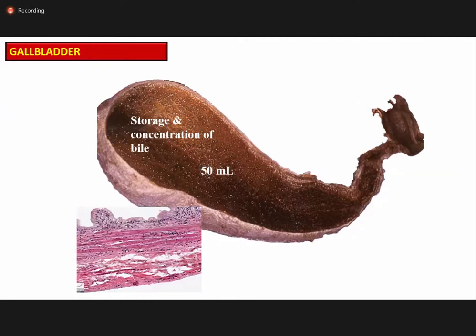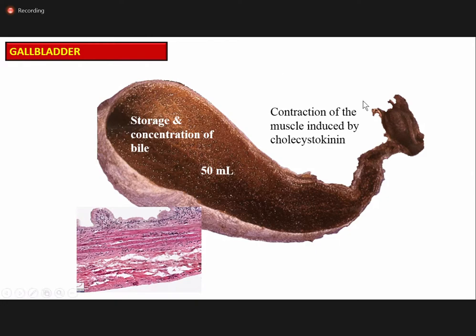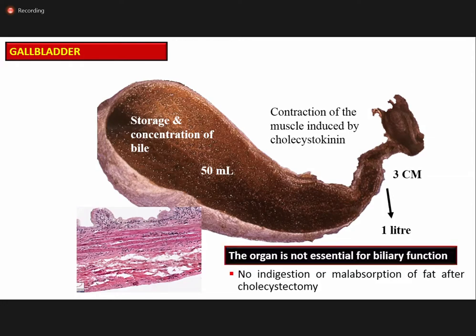Bile from the common hepatic duct goes through the cystic duct into the gallbladder, where it is concentrated, stored, and finally secreted into the common bile duct through the hormone cholecystokinin, which induces contraction of the gallbladder muscle. About one liter of bile is produced by the liver per day. The gallbladder is not essential for biliary function, as no indigestion or malabsorption of fat occurs after cholecystectomy.